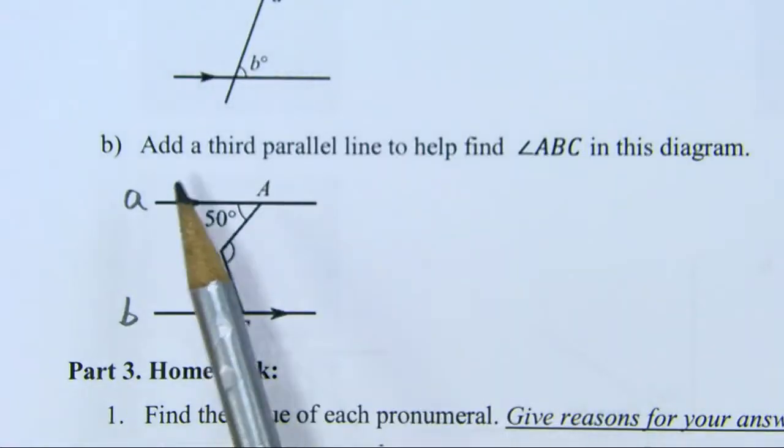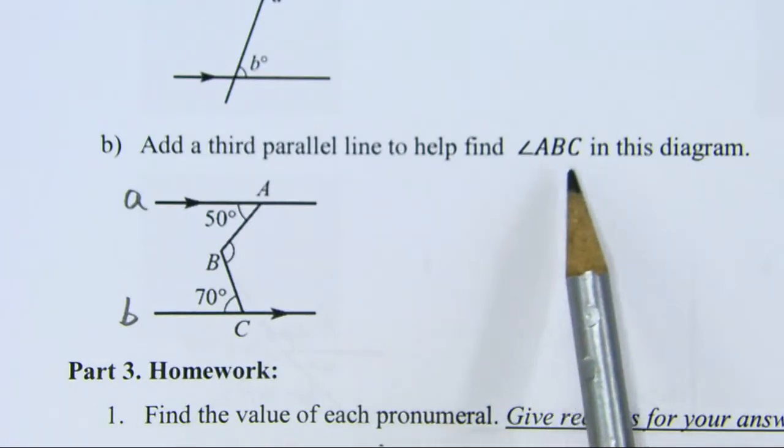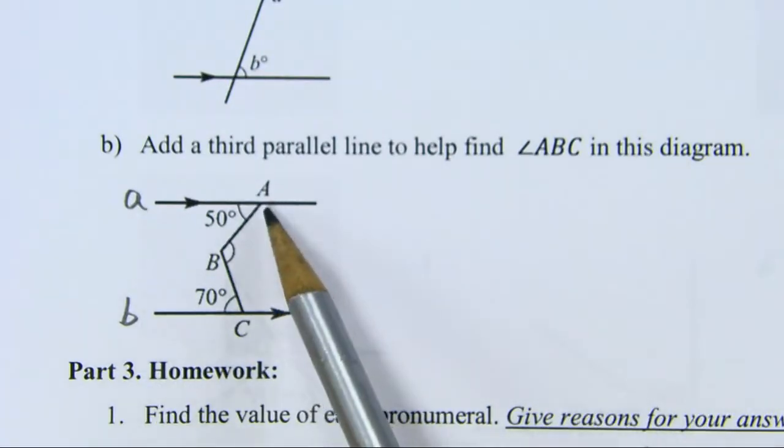Let's look at this question. Add a third parallel line to help find angle ABC in the diagram. So if I want to find angle ABC, I have to look at the relationship between the unknown angle and the angles you are given.